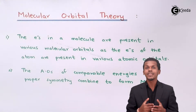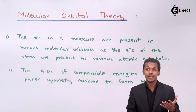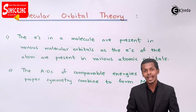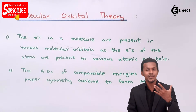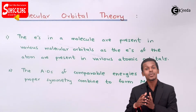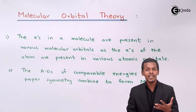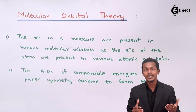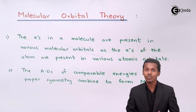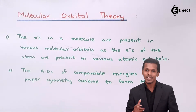In the previous lecture we learned about the Valence Bond theory as well as the hybridization concept. Now we are going to talk about molecular orbital theory — what this theory means, what the postulates behind it are, and how it helps us understand how molecules are formed from two or multiple atoms. Let us find out the postulates.